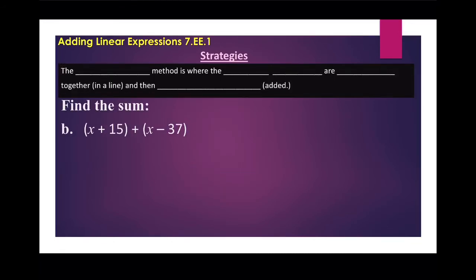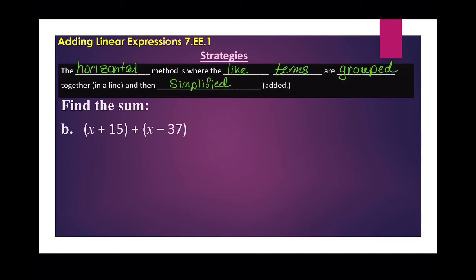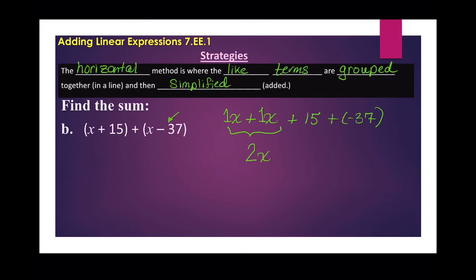The other strategy is called the horizontal method, where the like terms are grouped together in a line and then you simplify. We've got x plus 15, so I'm going to write x plus x — then plus 15 plus negative 37. I know that says minus 37, but subtraction makes the number in front of it negative, so it's really negative 37. Putting the x's together — those are just 1x and 1x, so 1 plus 1 is 2, giving you 2x. Then 15 plus negative 37 is negative 22. And that's it — that's as far as you need to go with that problem.